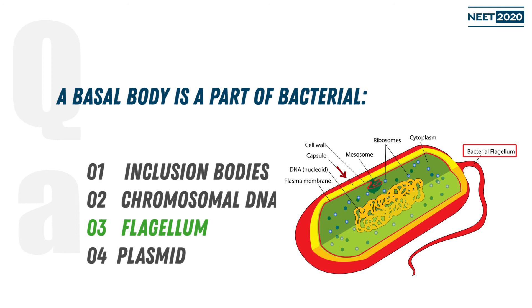Remember that when you talk about eukaryotic cells, when we refer to centriole, cilia, and flagellum, we call it a basal body. But that is different with respect to eukaryotic cells. We are talking about prokaryotic cells, and we have to explain what exactly the basal body means.